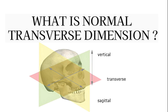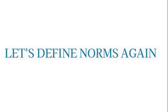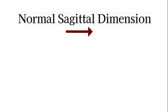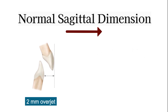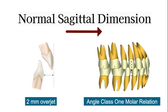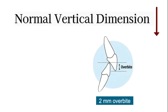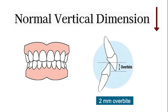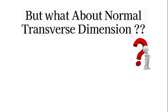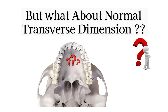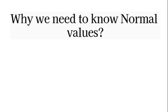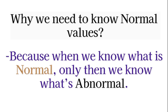The search for the normal in the transverse dimension. Let us define the norms again. In the sagittal dimension, it is normal to have 2 mm of overjet and Angle's Class I molar relation. In the vertical dimension, a 2 mm of overbite is the norm. Anything more than this is a deep bite and anything less is called an open bite. But what about the norm in the transverse dimension? We need to know what is normal because only then we can know what is abnormal.